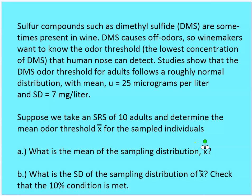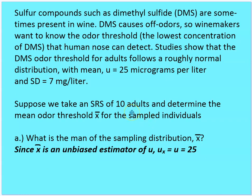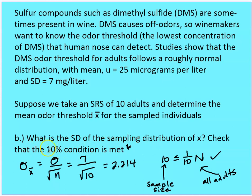We're going to check to see if the 10% condition is met. Since we're assuming that the sample mean is an unbiased estimator of the population mean, the sample mean equals the population mean of 25 micrograms per liter. For the standard deviation: the sample size is 10 adults, definitely less than or equal to one-tenth of the population of all adults, so the 10% condition is satisfied. Therefore, the standard deviation of the sample is 7 divided by the square root of 10, which equals 2.214.